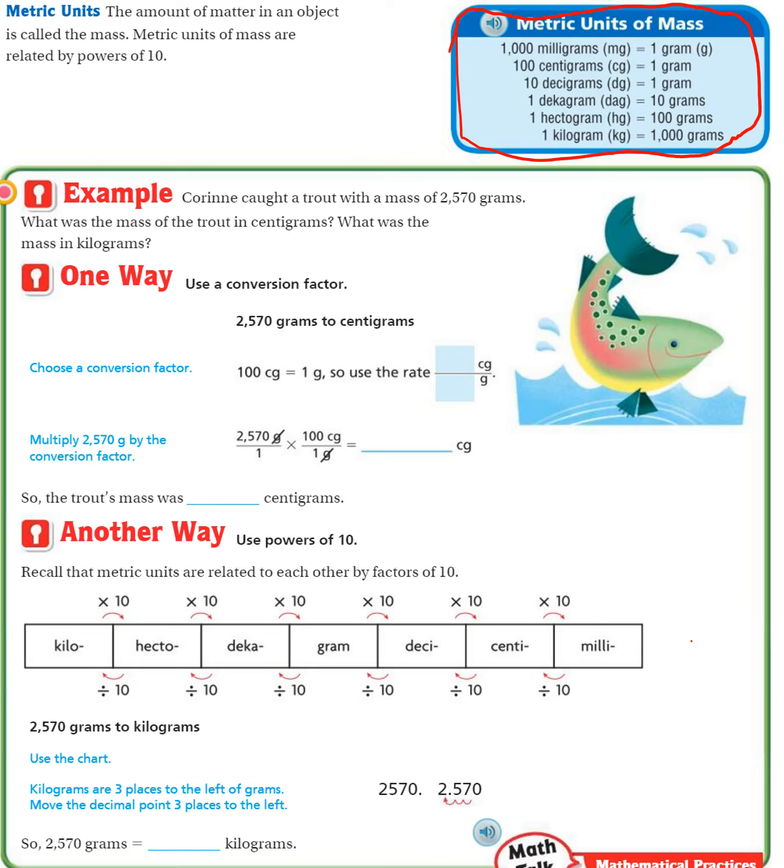Metric units. The amount of matter in an object is called the mass. Metric units of mass are related by powers of 10, just like all metric units of length and mass. That's the nice thing about the metric unit, just powers of 10.